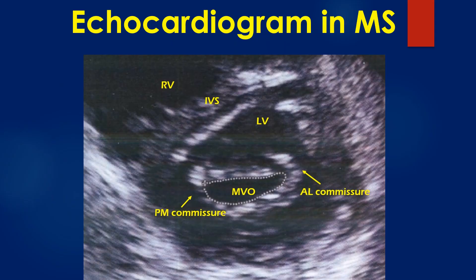The echocardiogram in mitral stenosis shows commissural fusion. The parasternal short axis view shows the mitral valve in cross section with the anterolateral and posteromedial commissures. The valve leaflets are thickened and the commissures are fused. The cut is slightly oblique, as a good cut should appear circular. It is often difficult to get a good circular outline of the mitral valve due to varying anatomical features of the chambers and cardiac position.